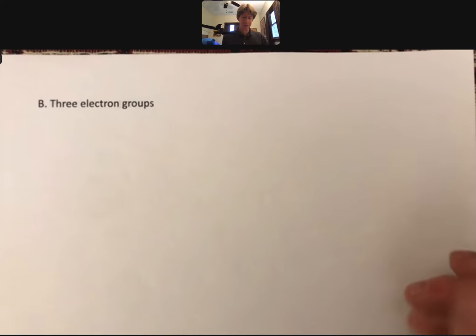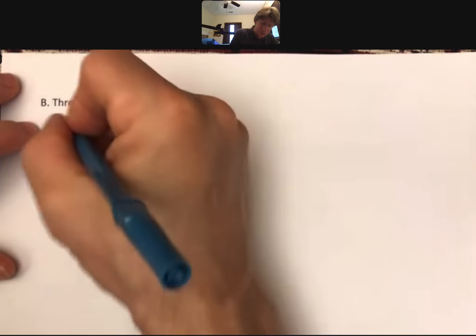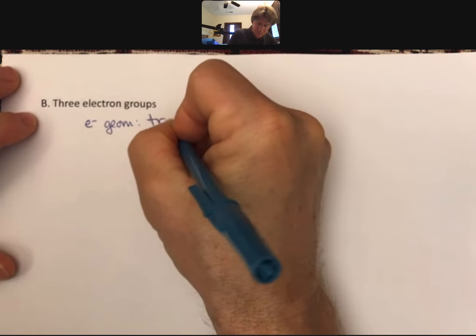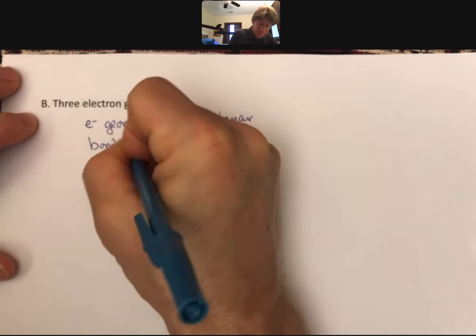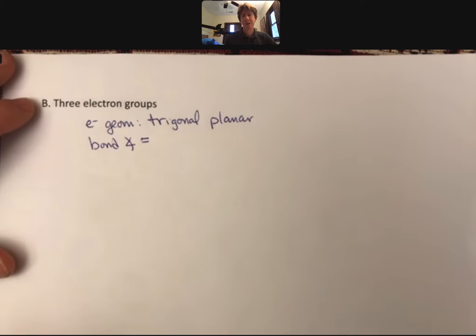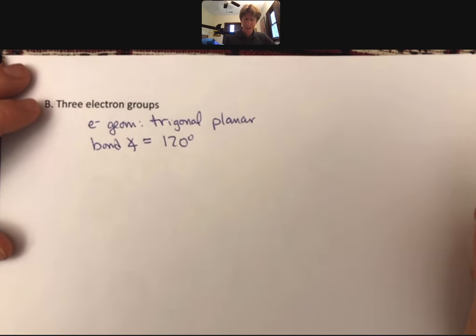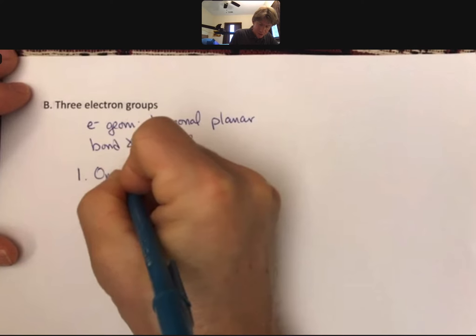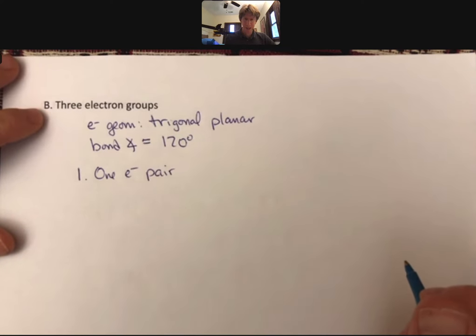Not so bad so far. However, it does get more complicated when we get to three electron groups. For three electron groups, we have always the electron geometry is trigonal planar, and the bond angle is always 120 degrees when they're all atoms, less than 120 if there's one or more pairs of electrons there. Now we have to talk about two cases, so one electron pair on the central atom.